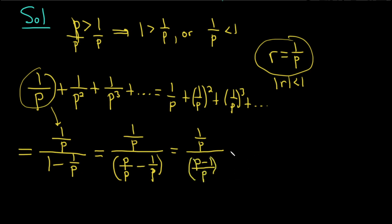And then we're dividing. So when you divide you really multiply by the reciprocal. So this is 1 over p times the reciprocal of this piece which is p over p minus 1. These cancel and so you're left with 1 over p minus 1. And that is the sum of the series.